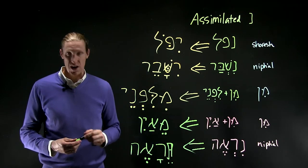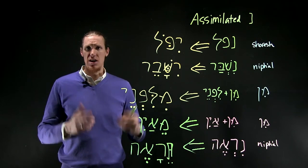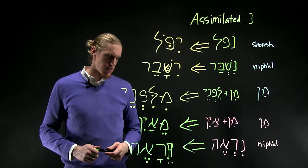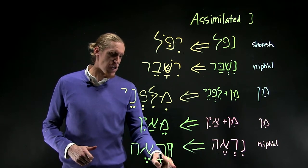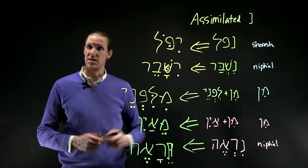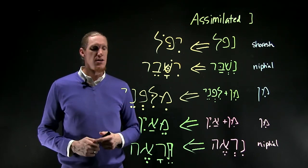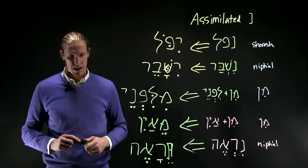This is a form from Genesis 1. It will appear, talking about the land, it will be seen. And so the hirik here that you would expect under the prefix of the nifal is rejected and it's lengthened or tsere-rized by the rejected dagesh.